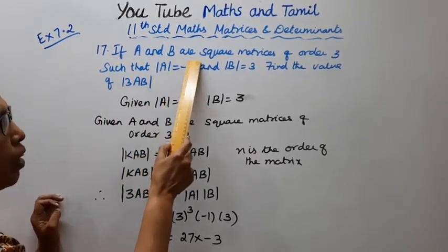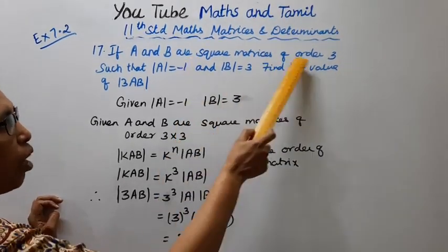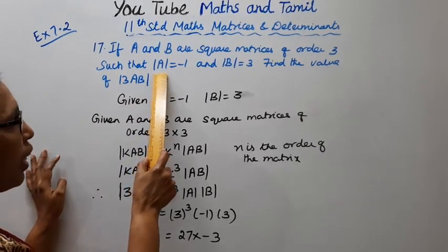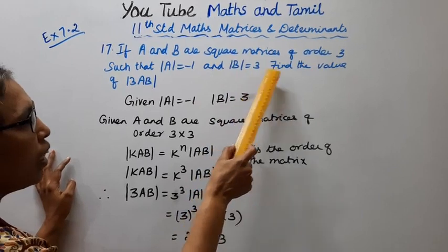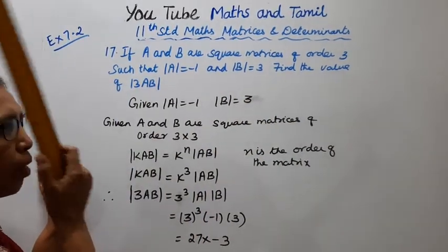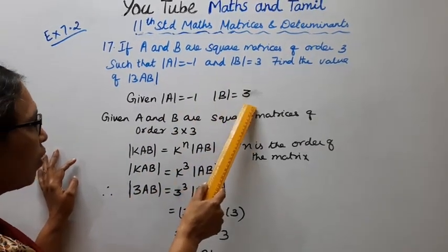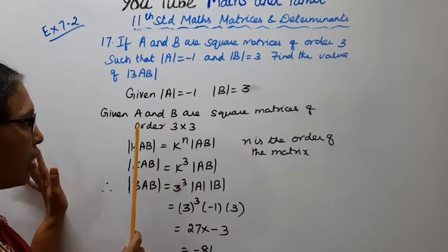If A and B are square matrices of order 3, such that determinant of A equal to minus 1 and determinant of B equal to 3, find the value of determinant of 3AB. Given: determinant of A is minus 1, determinant of B is 3. A and B are square matrices of order 3.